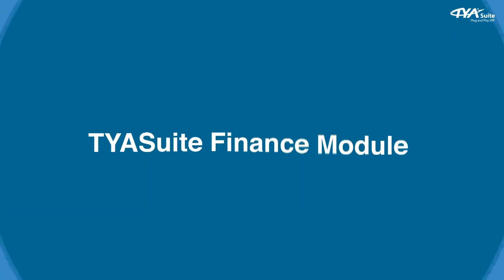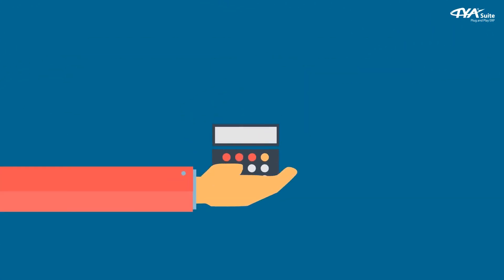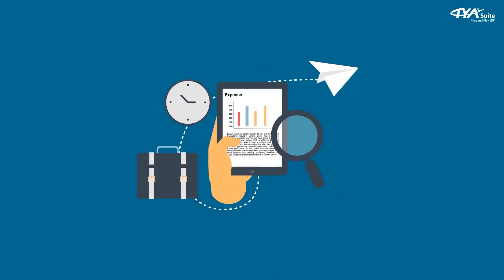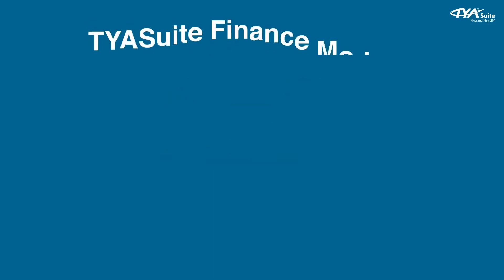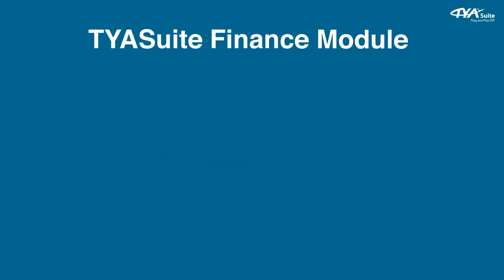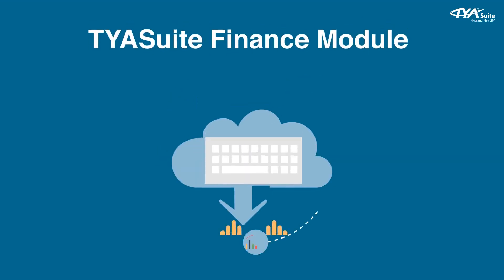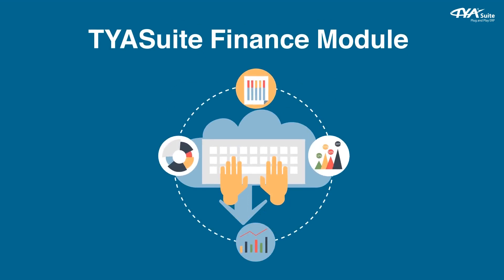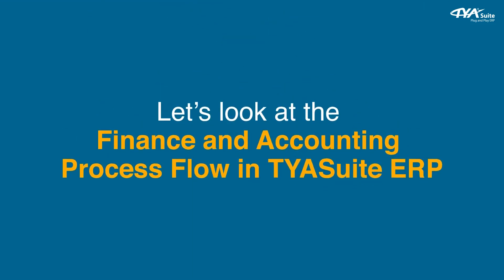TYASuit finance module. Accounting is the most critical part of any business process. Management needs constant access to real-time accounting data for various decision-making activities. The TYASuit finance module helps management and the accounting team get perfect control by automating accounting at each step of the business processes. Let's look at the finance and accounting process flow in TYASuit ERP.